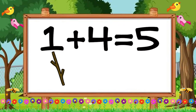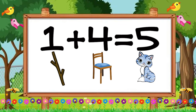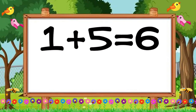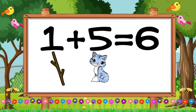One like a stick plus four like a chair is equal to five. Five like a pussycat. And we're going to add one plus five. One like a stick plus five like a pussycat is equal to six.